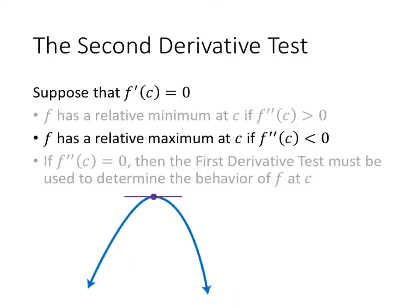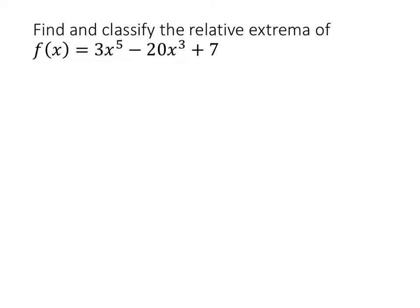Alternatively, if we have a point where the derivative is zero and the second derivative is negative, the function is concave down at that point, and that tells us we have a relative maximum there. Now let's take everything we know about relative extrema — the first and second derivative tests — and find all of the relative extreme values of this function.